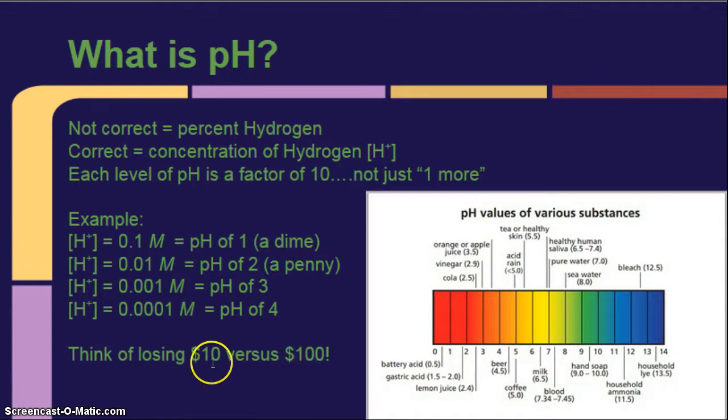That's a factor of 10. So, if my concentration of hydrogen ions equals 0.1 molar, that'd be like a dime. My concentration of hydrogen ions equals 0.01 molar, that'd be like a penny. So, again, powers of 10.